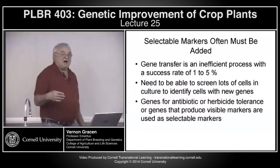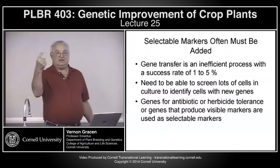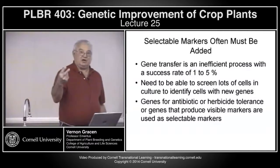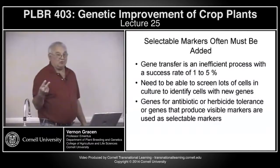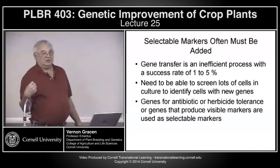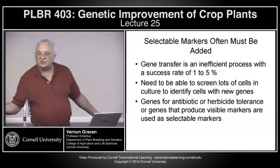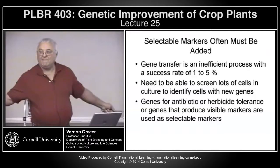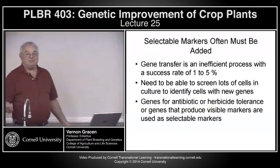We'll talk Monday about why Bt and herbicide tolerance were successful and accepted by farmers. The bottom line for farmers and why these traits are accepted is money — return on investment.